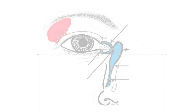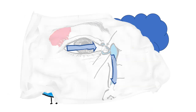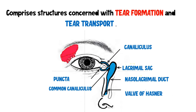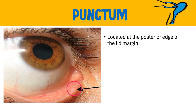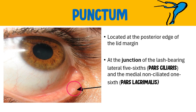Basically, the lacrimal gland produces tears and drains them into the superior fornix, and finally the tears flow from the lateral to the medial conjunctiva, enter the puncta, and reach the nose. Now let us talk about the structures involved in tear transport. First, let us talk about the puncta. The punctum is located at the posterior edge of the lid margin, at the junction of the pars ciliaris and pars lacrimalis.